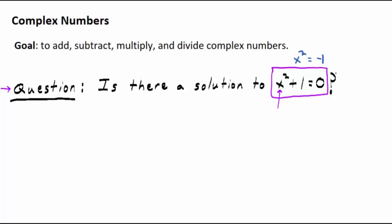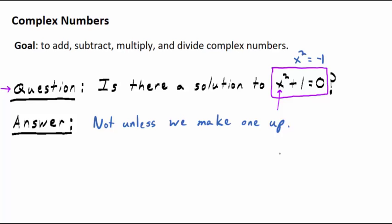No — 0 squared is 0, 1 times 1 is 1, and negative 1 squared is positive 1. There's no real number you can square and get negative 1. So the answer to the question, you might think, is no. But I'll say it this way: not unless we make one up.